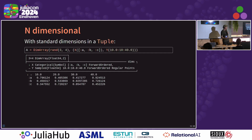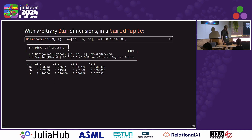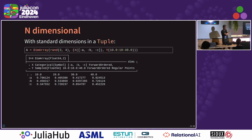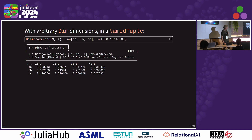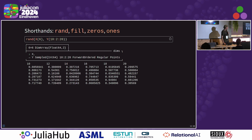So we can make n-dimensional arrays. Here we have an X and a Y dimension — a categorical and a sampled dimension. And actually this prints way nicer in the REPL now, it's all coloured, but it doesn't show in the slides unfortunately. We can also make arbitrarily named dimensions just by using a name tuple to define the array, and then we have dimensions called A and B. People in stats and other fields like these more, but in spatial data we mostly use X and Y. We can also do things like just make rand, fill, or zeros using dimension wrappers and get a dim array back — as a shorthand for making a quick array with named dimensions.